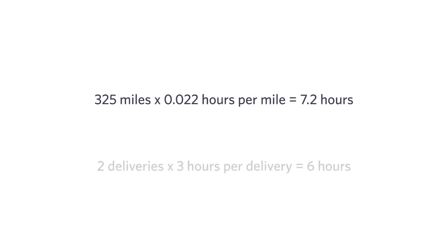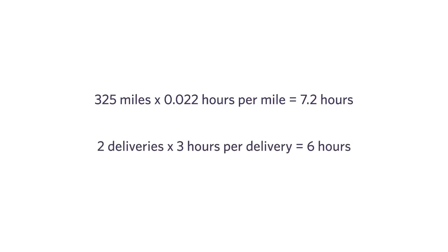Notice my problem now. I've got two conflicting estimates for how long my truck will be gone. On the one hand, if I look at hours per mile traveled, I'm estimating that my truck's going to be gone 7.2 hours. On the other hand, if I look at hours per delivery, I find that I estimate my truck's going to be gone six hours. So which is it — is it 7.2 hours or is it six hours?